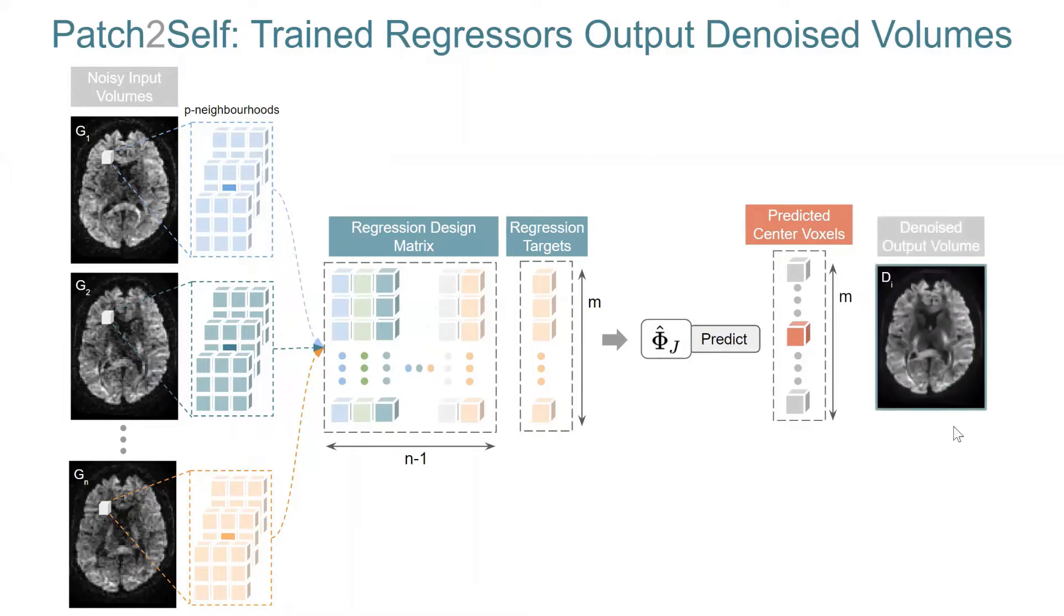And what you end up getting is the denoised volume. So just as a quick note, the volume that we want to denoise, rather the gradient direction that we want to denoise, is only used as a target. It is not a part of the design matrix.